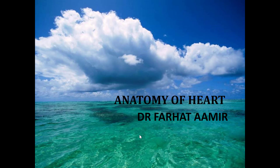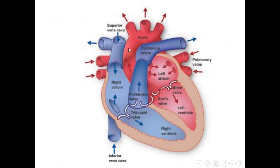We will start the anatomy of the heart. First of all, you should know how many chambers are there in the heart. There are four chambers in the heart. The upper right chamber is called the right atrium, and the upper left chamber is called the left atrium. The upper chambers are called atria or atrium, and the lower chambers are called ventricles.